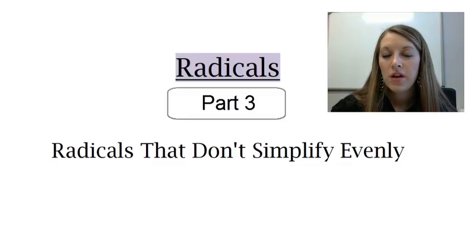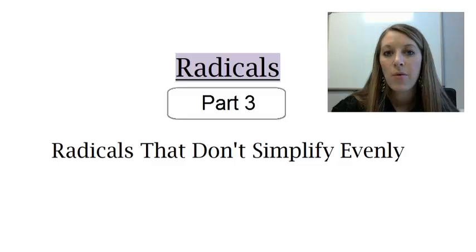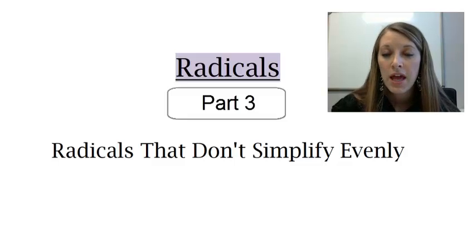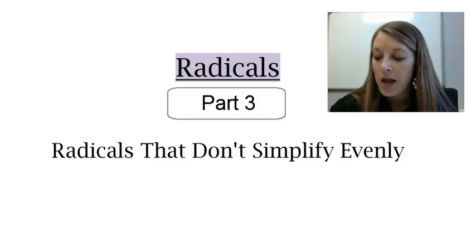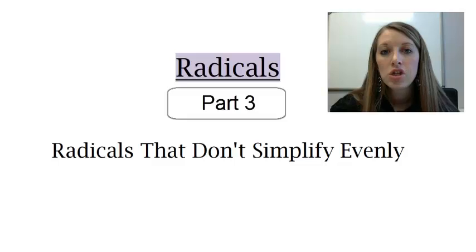So far in our radical videos, we've seen how to simplify radicals with just numbers, and we've seen how to simplify radicals with variables in them. But in both of those specific examples, it's been radicals that have simplified evenly. In this example, we're going to work radicals that don't simplify evenly, and to be honest, this will be more of the case than the other situations. Let's go ahead and jump right into my analogy to try and help you figure out how these work out.